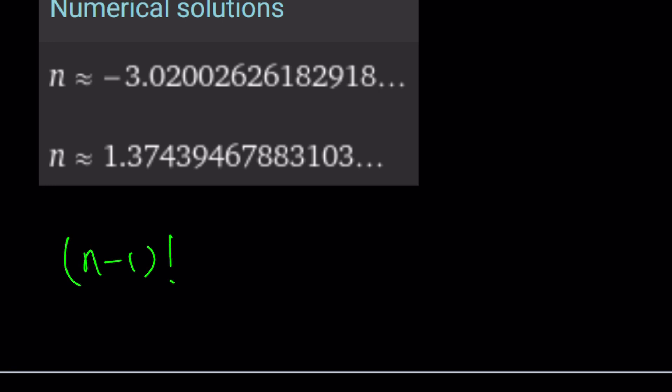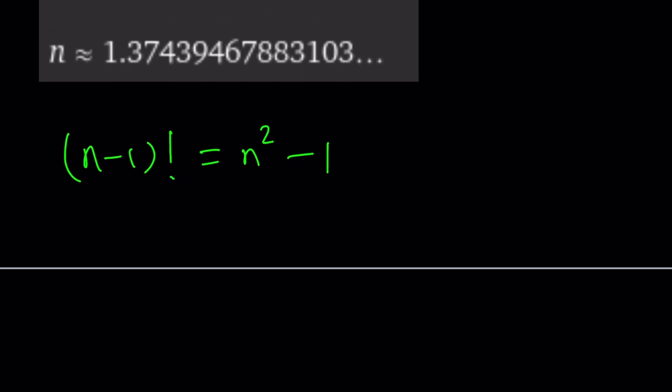I'm going to pick it up from there. n minus 1 factorial equals n squared minus 1. So what was I saying? I was saying that this is called difference of two squares, and we can factor it. So let's go ahead and do it. Factor n squared minus 1 into n minus 1 times n plus 1. Normally, I would write the n plus 1 first, but why did I write n minus 1 first?